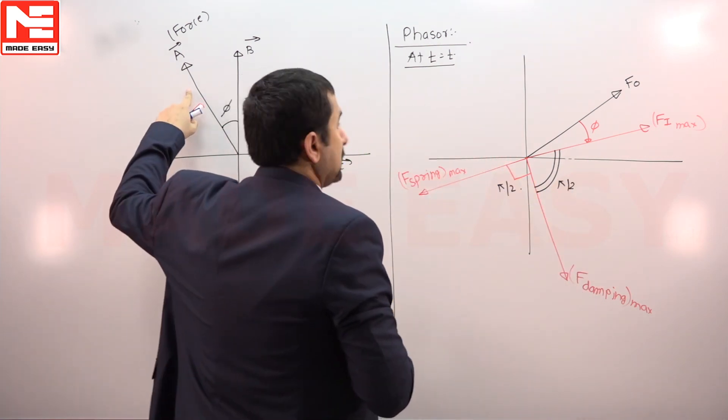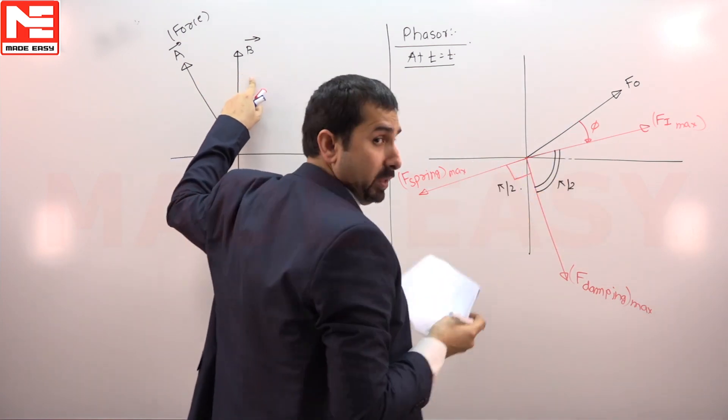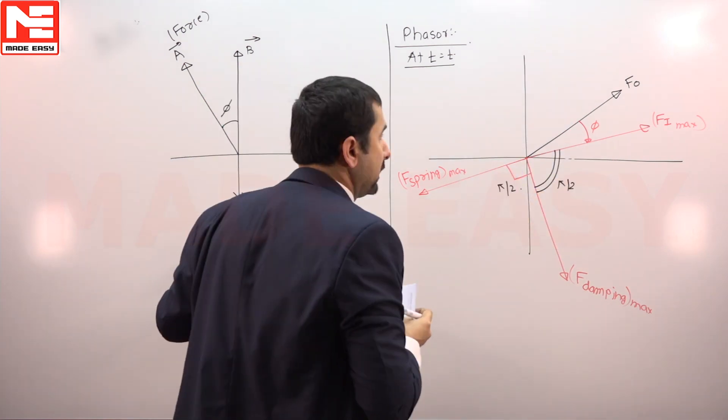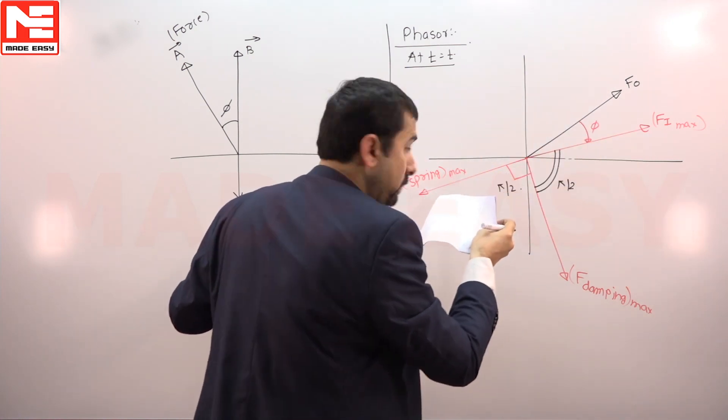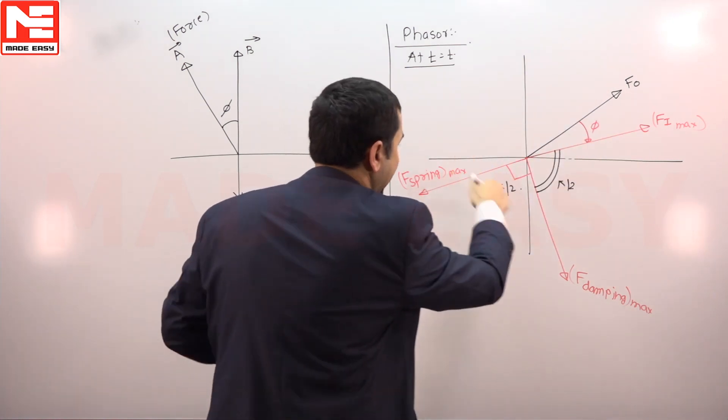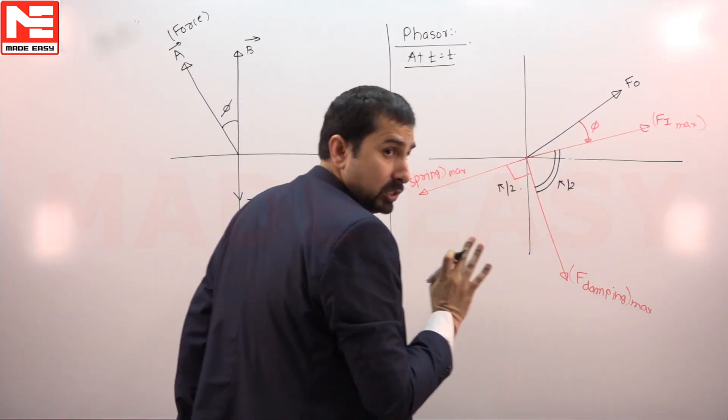So if this is the force vector, phi lagging is inertia, so here will be the inertia. Just opposite to the inertia will be the spring force, and the vector is the 90 degree leading vector which is the damping force.